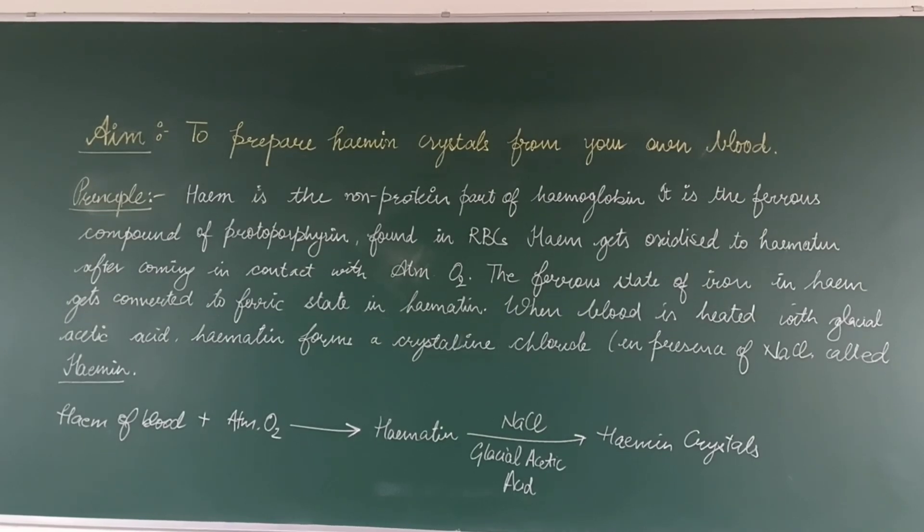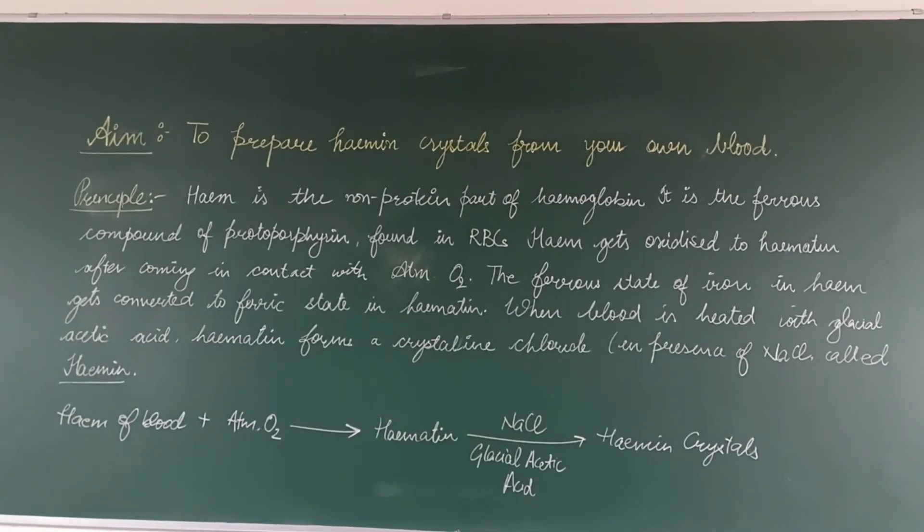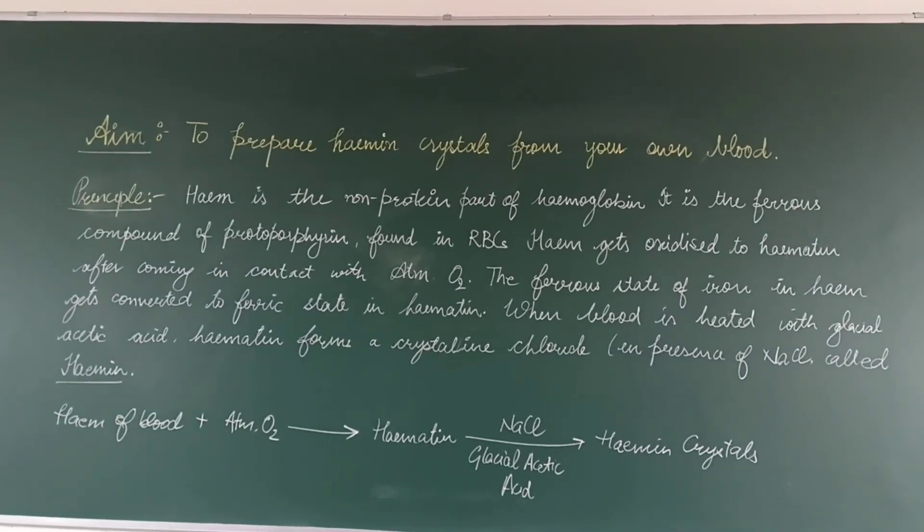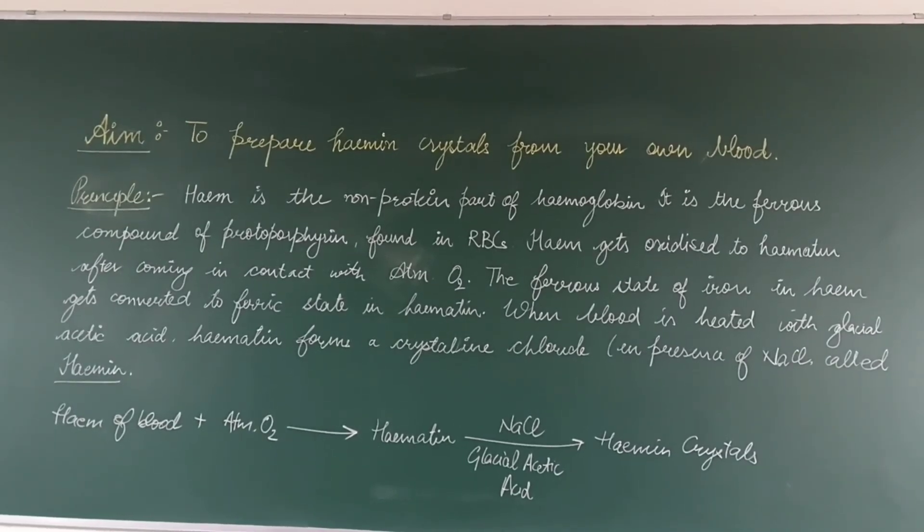Heme is the non-protein part of hemoglobin. It is the ferrous compound of protoporphyrin found in RBCs. These are the red blood cells.